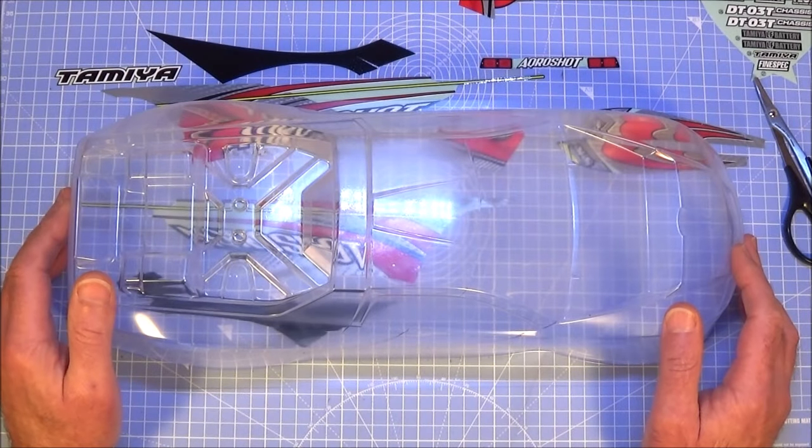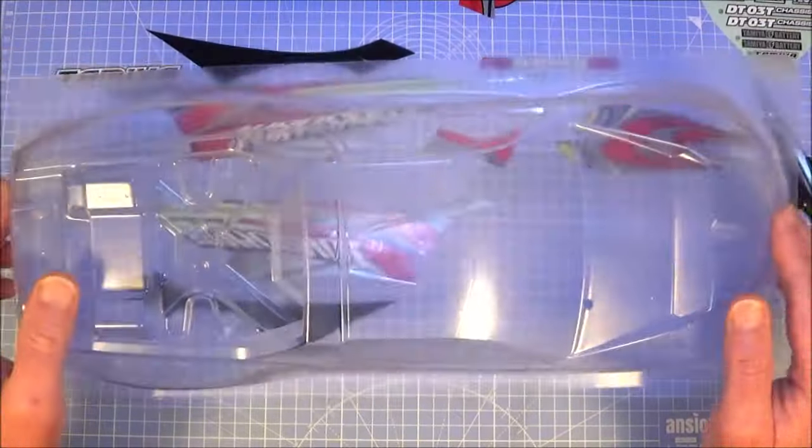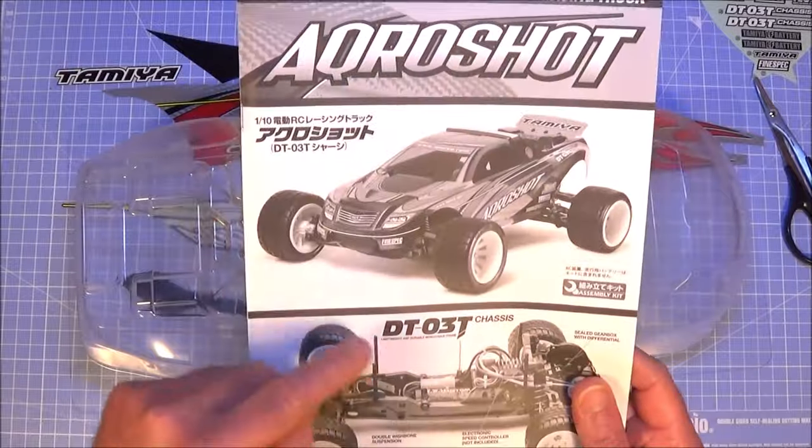Hi there, Mark here again and in this video I'm going to be cutting out, painting and detailing this fantastic body shell for the Tamiya Acroshot racing truck or the DTO3 chassis.